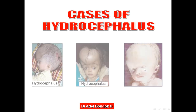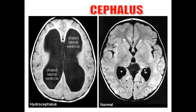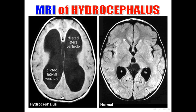These are cases of hydrocephalus. On MRI, this is a normal brain showing the lateral ventricle posterior horn, lateral ventricle anterior horn, and the third ventricle. In hydrocephalus, you can see dilated lateral ventricles.